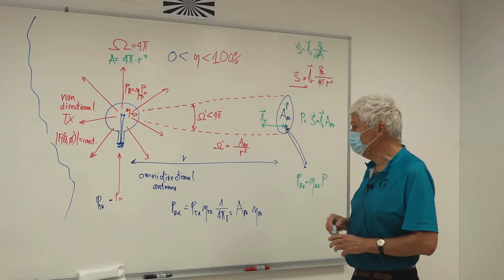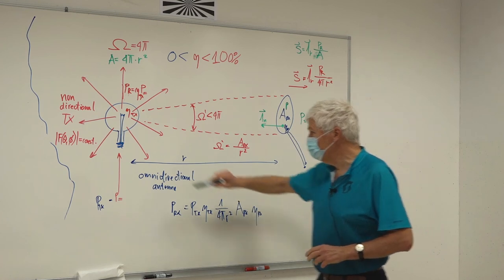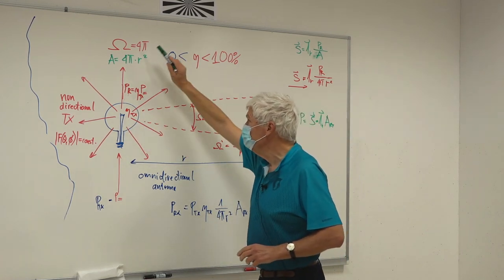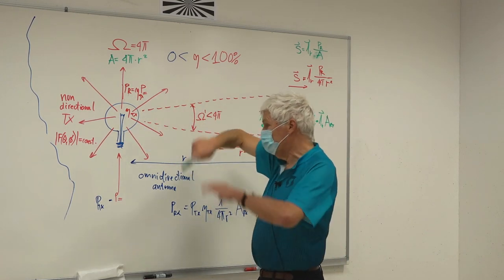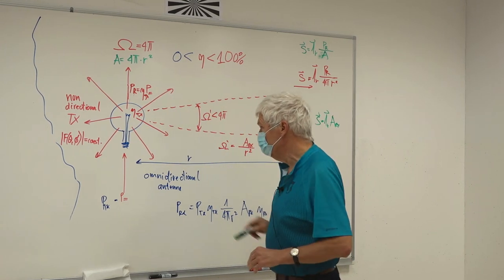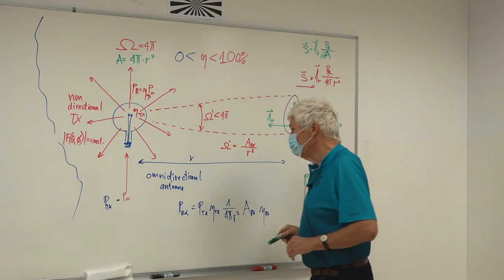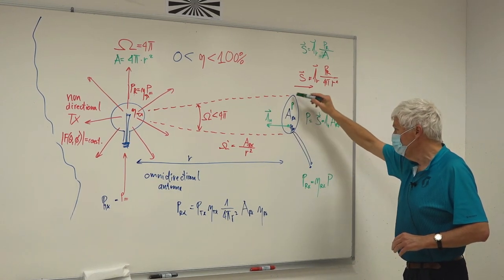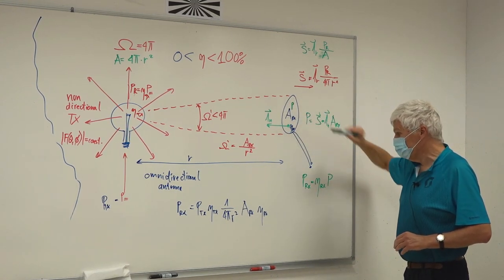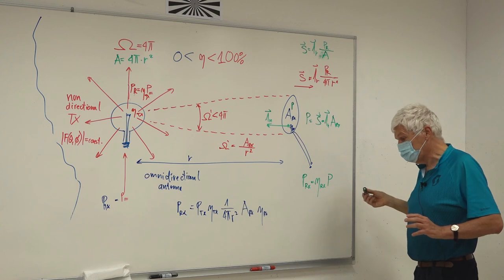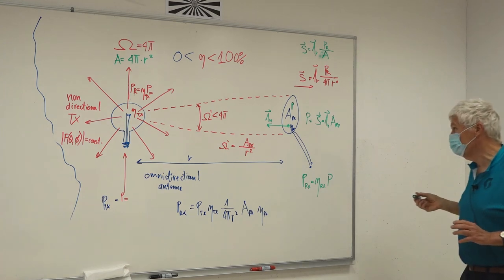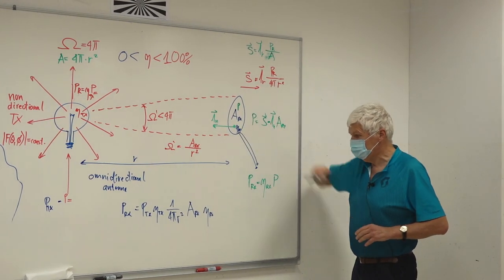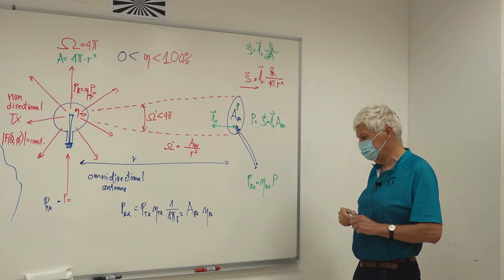Just to explain what we were doing: first, the efficiency of the transmitter, then spreading the power out over the full solid angle, and then collecting the power with a receiver of limited area.